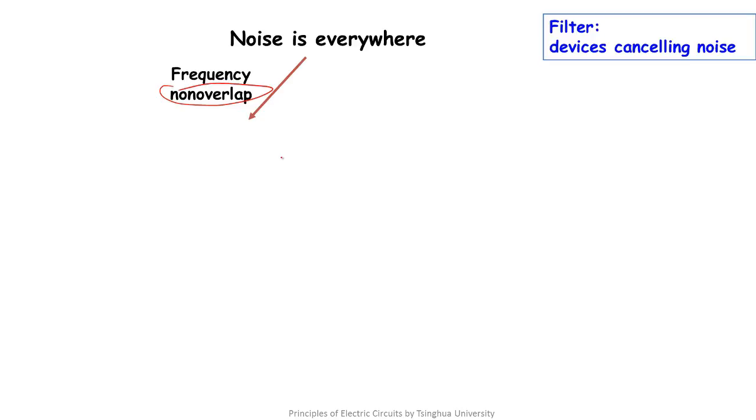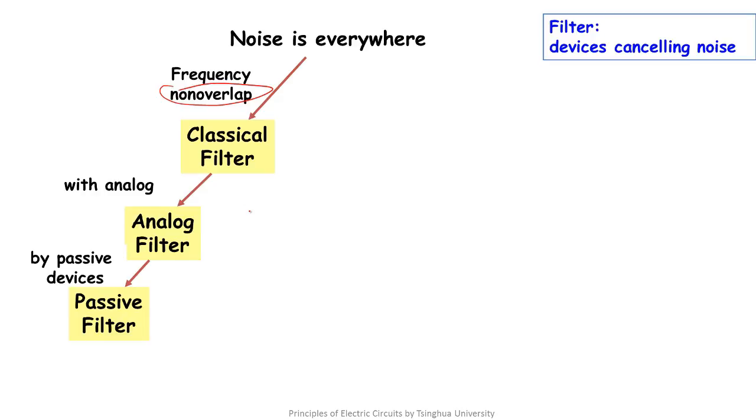If the useful signal frequency and the frequency of the noise are not overlapping, in this case, the designed filter is called the classical filter. If the filter is implemented by using analog system, it's called analog filter.